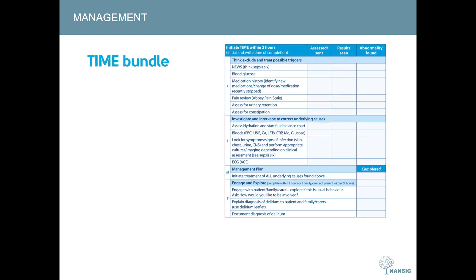For management, one should first implement the TIME bundle — a four-step checklist. T stands for think, exclude, and treat possible triggers, prompting the clinician to look for sepsis, blood glucose abnormalities, triggering medications, persisting pain, urinary retention, and constipation. I is investigate and intervene to correct underlying causes — assess hydration, conduct a full blood screen, look for signs of infection, perform cultures and imaging, and conduct an ECG. M is management plan — initiate treatment for the causes and triggers found. E is engage and explore — engage with the patient and family or carers, ask what is normal for the patient, explain the diagnosis of delirium, and document it.